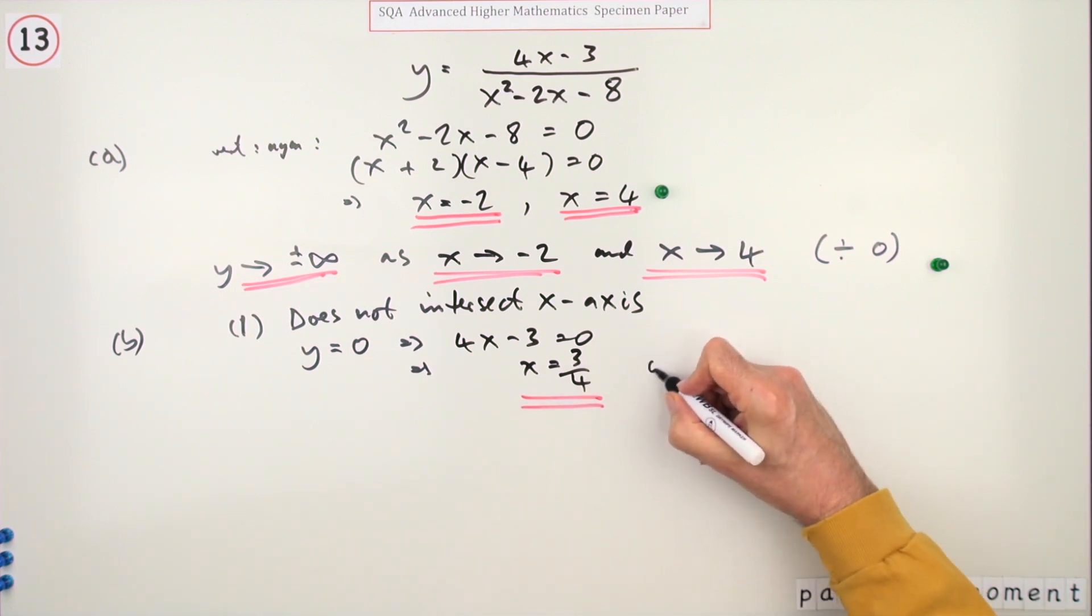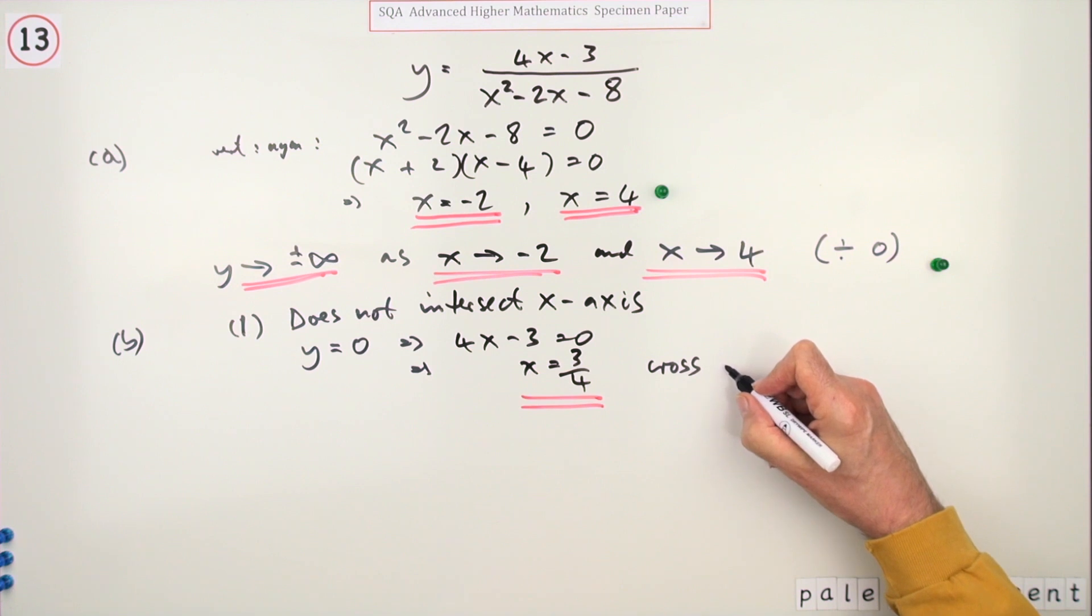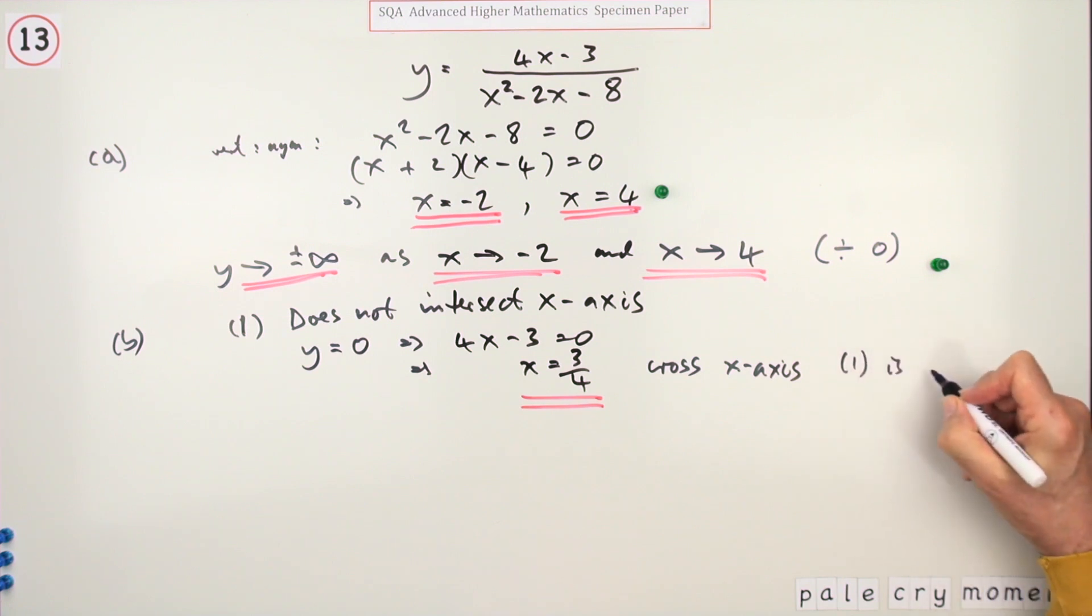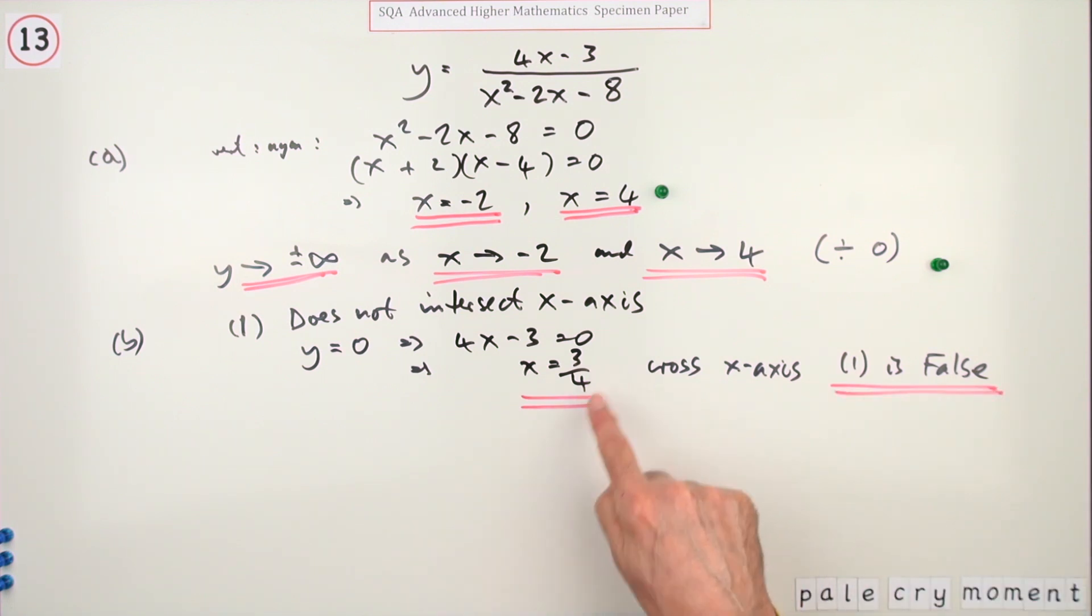Which means it does cross the x-axis, which means one is false. Of course, I'm saying cross because I've got a single root. That's worth a mark.